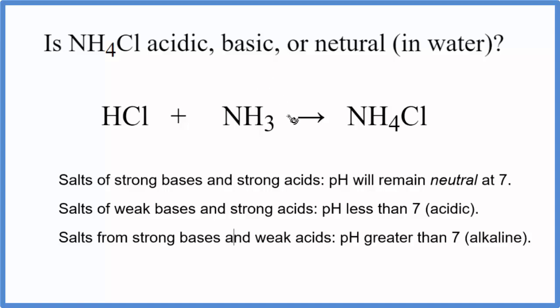To figure that out, we need to know the reaction that created the ammonium chloride. Here we have HCl, hydrochloric acid, plus NH3, ammonia, and that gives us our salt, NH4Cl.